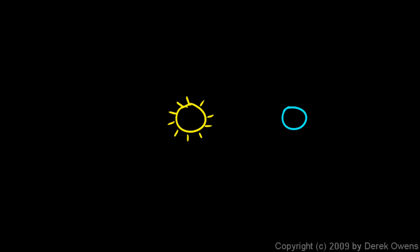Here's the earth over here — not drawn to scale — and let's draw it tilted a little bit. The axis of the earth is tilted, so here's our north pole and our south pole like that. Then let's draw another picture of the earth over here, tilted like that.